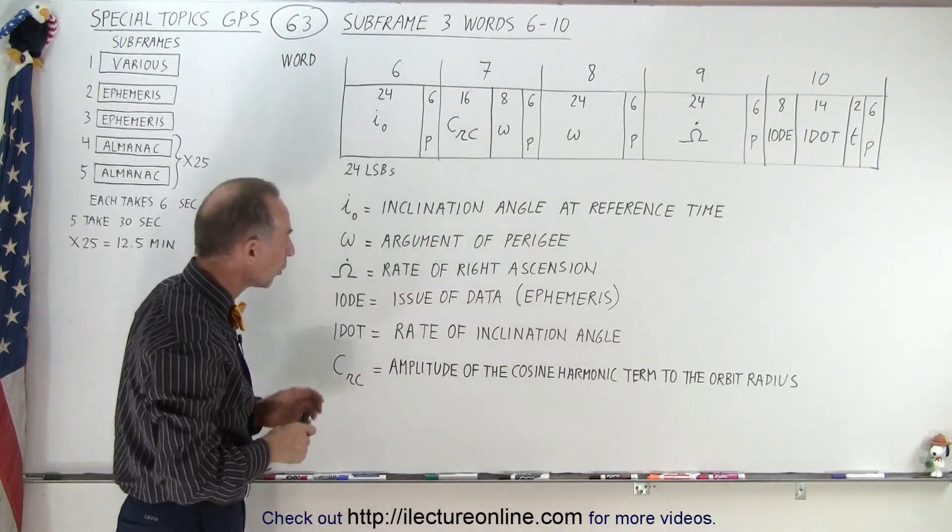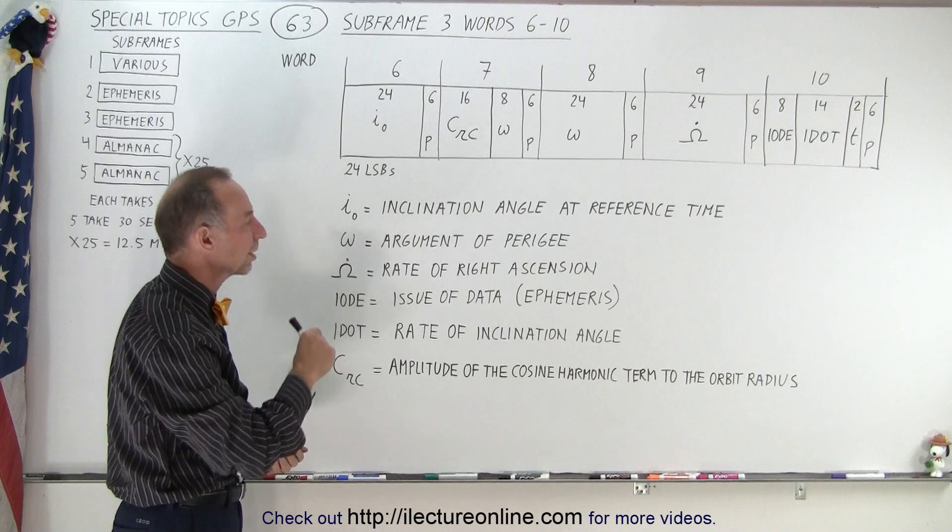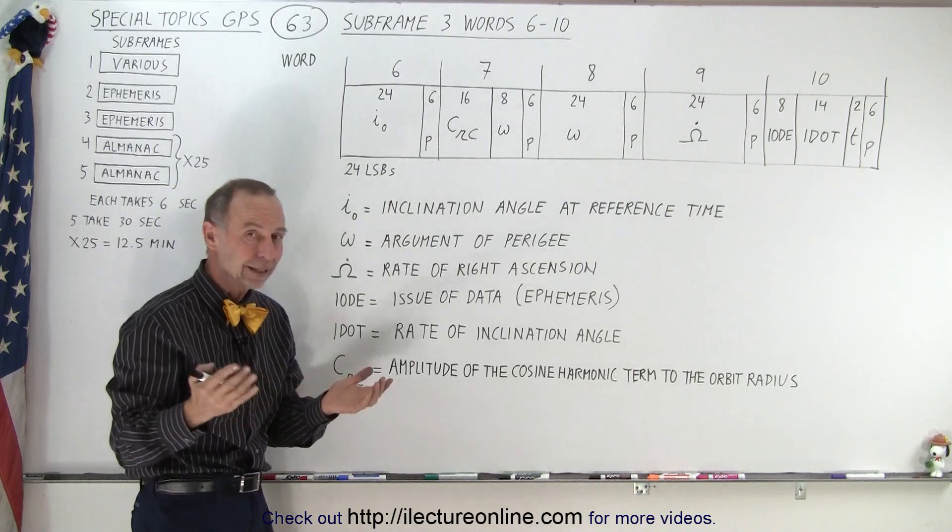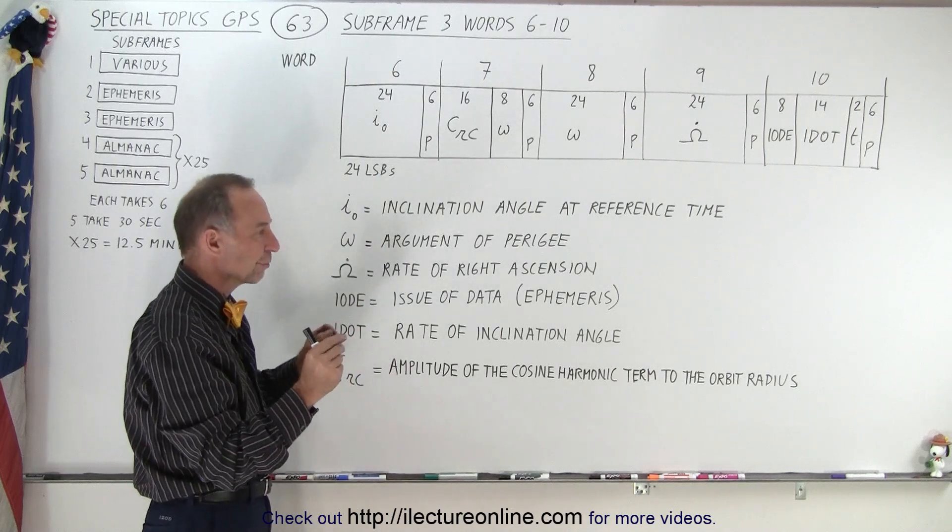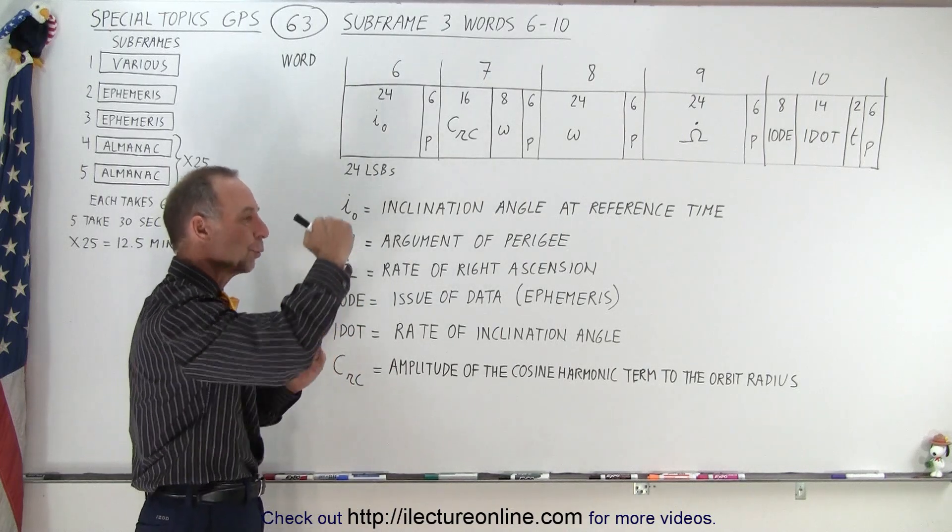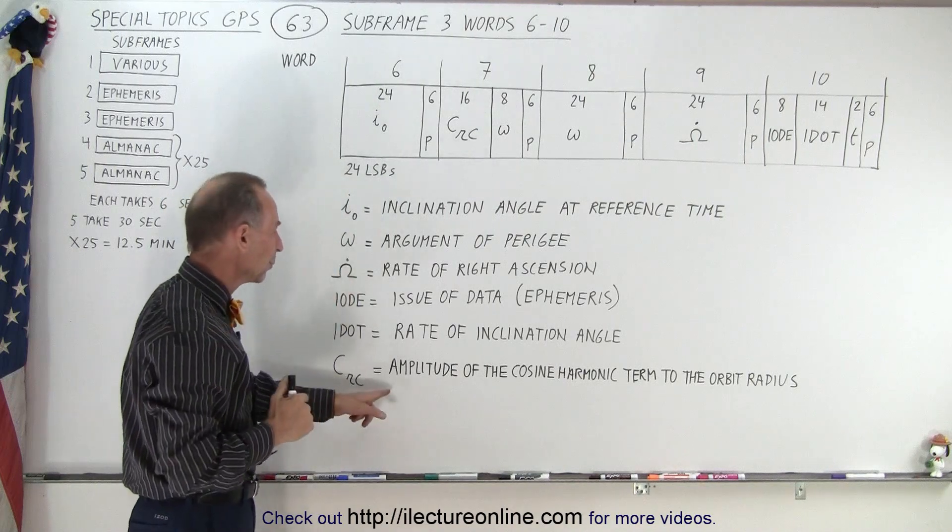And that is what we call the amplitude of the cosine harmonic term to the orbit radius. So again, because the orbits have some eccentricity, therefore they're not perfect circles, so the radius is going to vary.